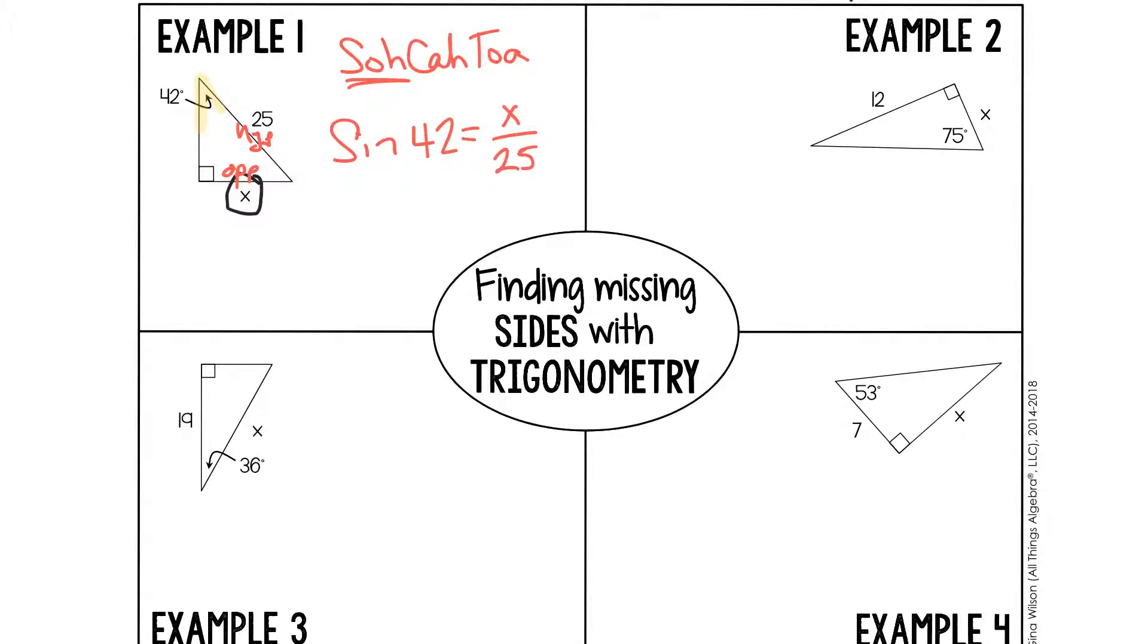We solve: x would now equal 25 times the sine of 42 degrees. If we put that in our calculator, sine of 42 degrees is approximately 0.6691. So 0.6691 times 25 gives us x is approximately 16.7, which would be our solution.